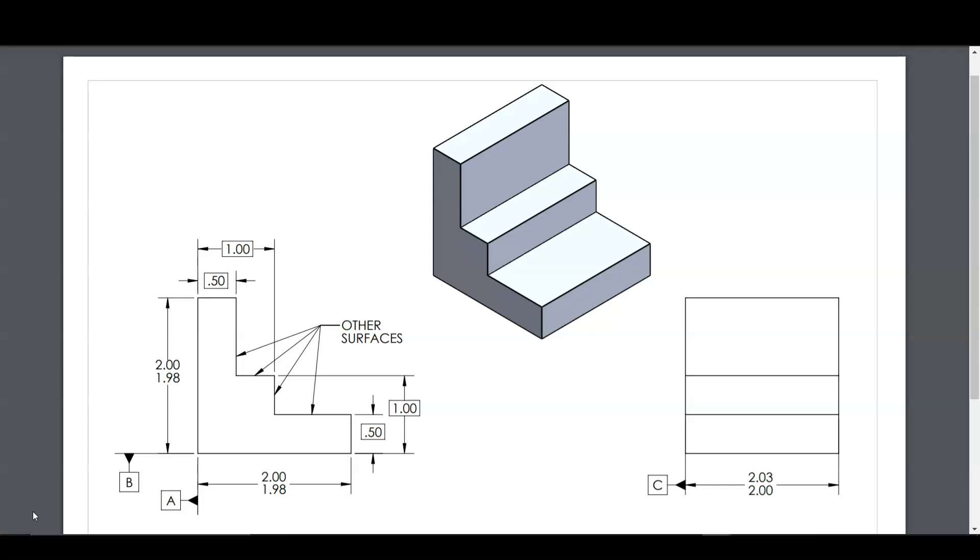It might seem simple. Just machine from those surfaces. Machine from datum feature A and datum feature C when you are making those other surfaces. And then just measure from those surfaces. Measure from datum feature A, measure from datum feature B. That seems pretty simple, right?